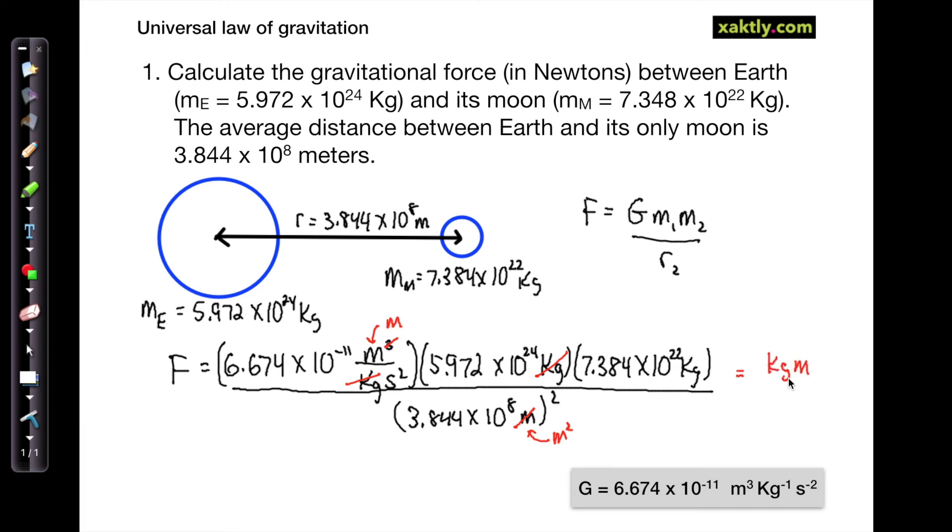All that really remains is just to do this arithmetic on a calculator, and what you'll find is 1.98 times 10 to the 20th Newtons, which is a very large force. Even though the Moon and Earth are very far apart and you're dividing by that large radius, the masses of these things are so big that that's what gives us this large force.